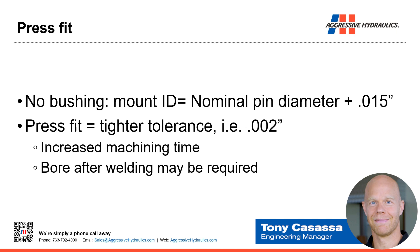If we had a cylinder pin mount with no bushing, we would typically design that pin hole ID at 15 thousandths over the nominal size, giving clearance for the pin to go through and a little room for any distortion. With press fit, we have a much tighter tolerance — the example we gave is two thousandths as the window for the mount tolerance. So when making that mount, we have to account for increased machining time to hold that tighter tolerance. It's pretty cheap and quick to blast a hole with a 15-thousandths tolerance; it takes more time and care to achieve two thousandths.